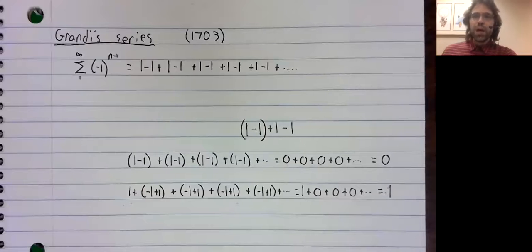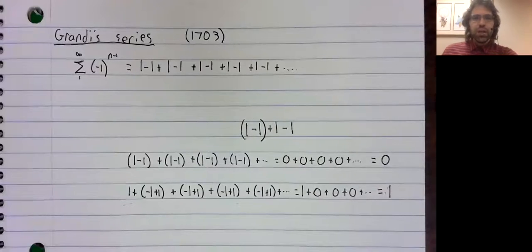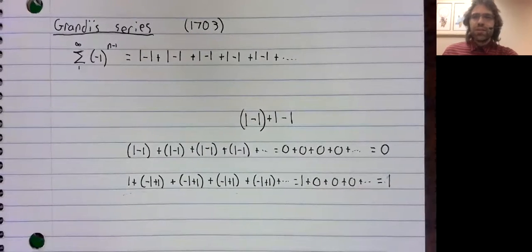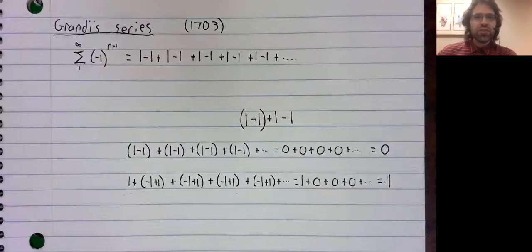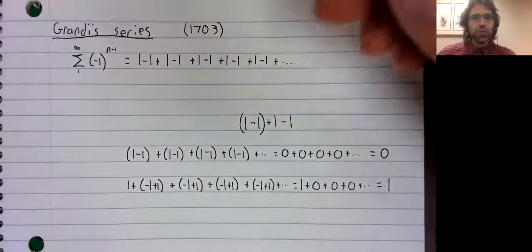But our modern definition of a limit will make it clear that this series doesn't have a sum. It diverges. Before I do that, maybe a little interesting historical note.